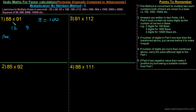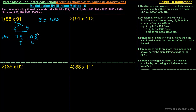The first part of the answer will be the difference of 88 and 9, or 91 and 12, which is 79. The second part will be the multiplication of 12 and 9, that is 108.